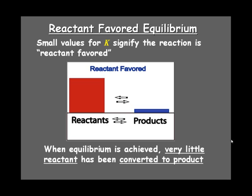When an equilibrium is achieved in a reactant-favored equilibrium, very little reactant has been converted to product. So you have mostly reactants left in the reaction mixture.